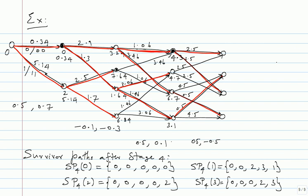To terminate, you feed in zero message bits, so the encoder drives back to state 0. I know the message bits are zero but not the actual received channel outputs. I will pick some additional received values: 0.1, 0.7 for one stage, then -0.2, -0.8 for the next. Go ahead and do the complete decoding — computing state metrics and branch metrics stage by stage.